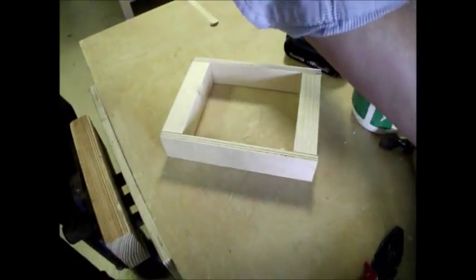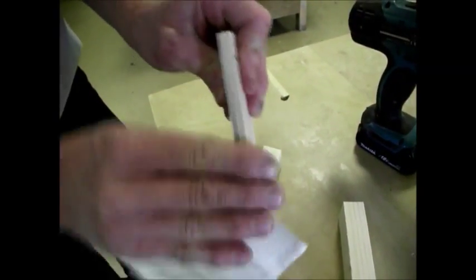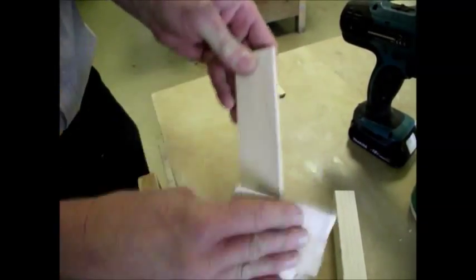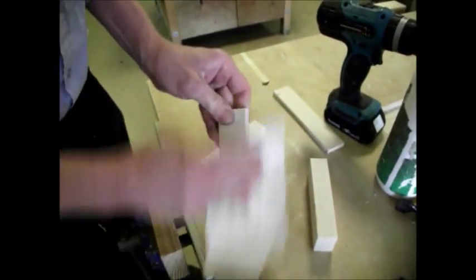And a good idea, especially with plywood, before you start working with it, is to get the splintery bits off the edge. So just take the corners down with a bit of sandpaper. Plywood is noted for giving you nasty splinters.